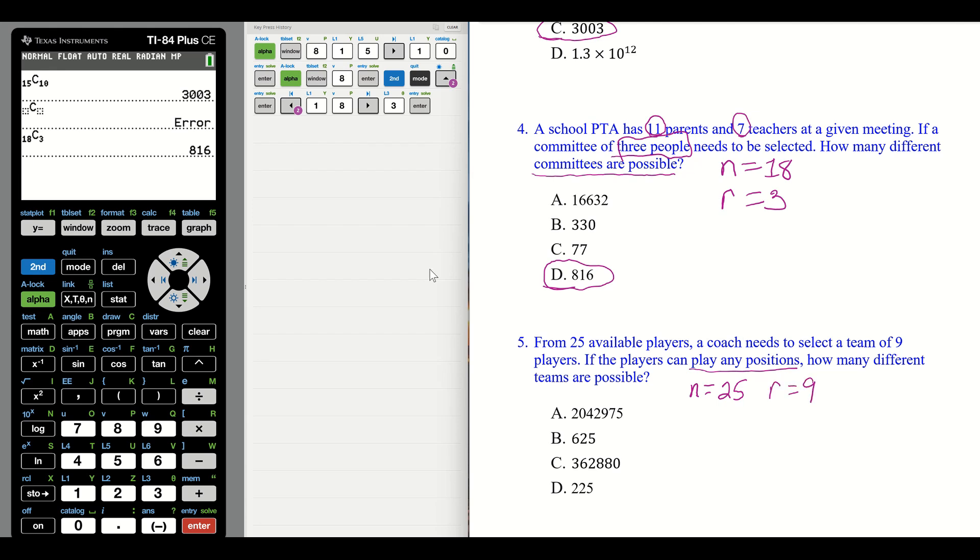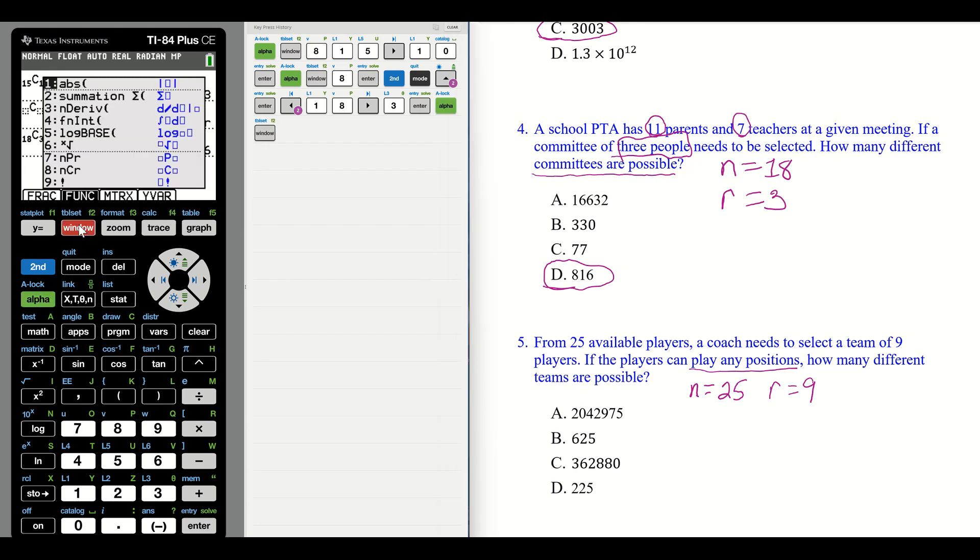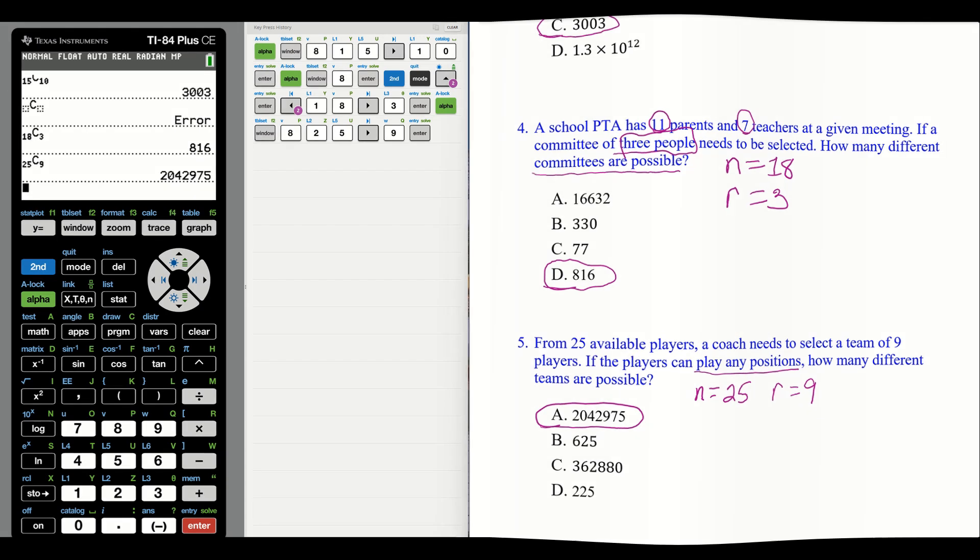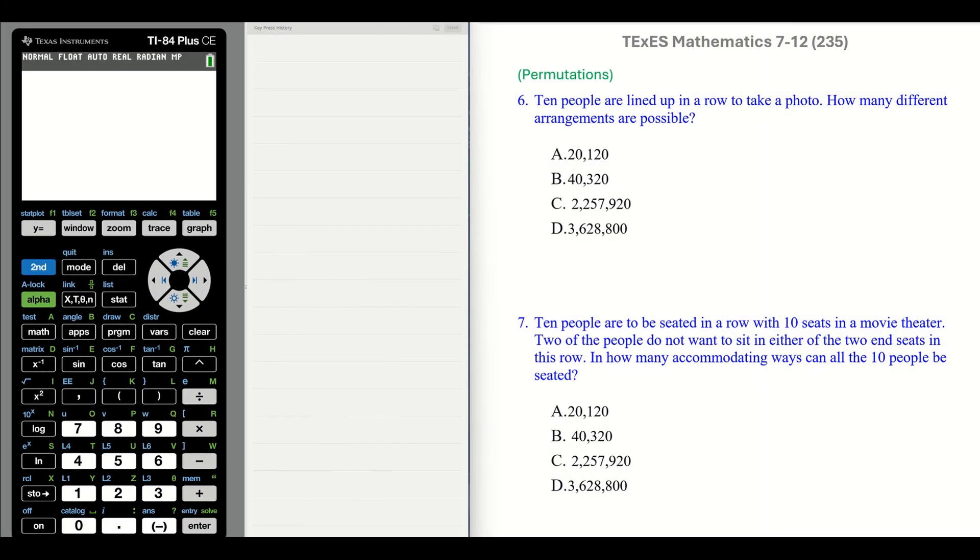N equals 25, and R equals 9. Go to our calculator, alpha, window, and this time I need to simply push my 8 once. We need 25, N is 25. Arrow over. And our R is 9. And that gives us a pretty significant number. That's several different teams. That's amazing.